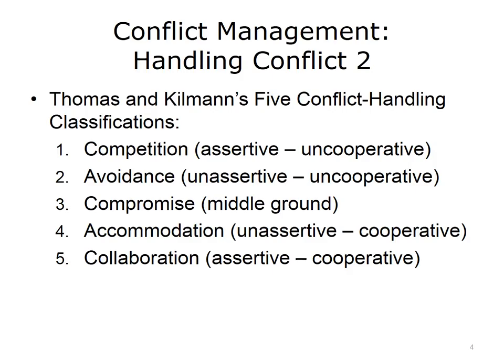Thomas and Kilman's five conflict handling classifications are as follows: Competition, or a competing style, is assertive and uncooperative. Avoidance is unassertive and uncooperative. Compromise represents the middle ground. Accommodation is unassertive and cooperative. And finally, collaboration is both assertive and cooperative.